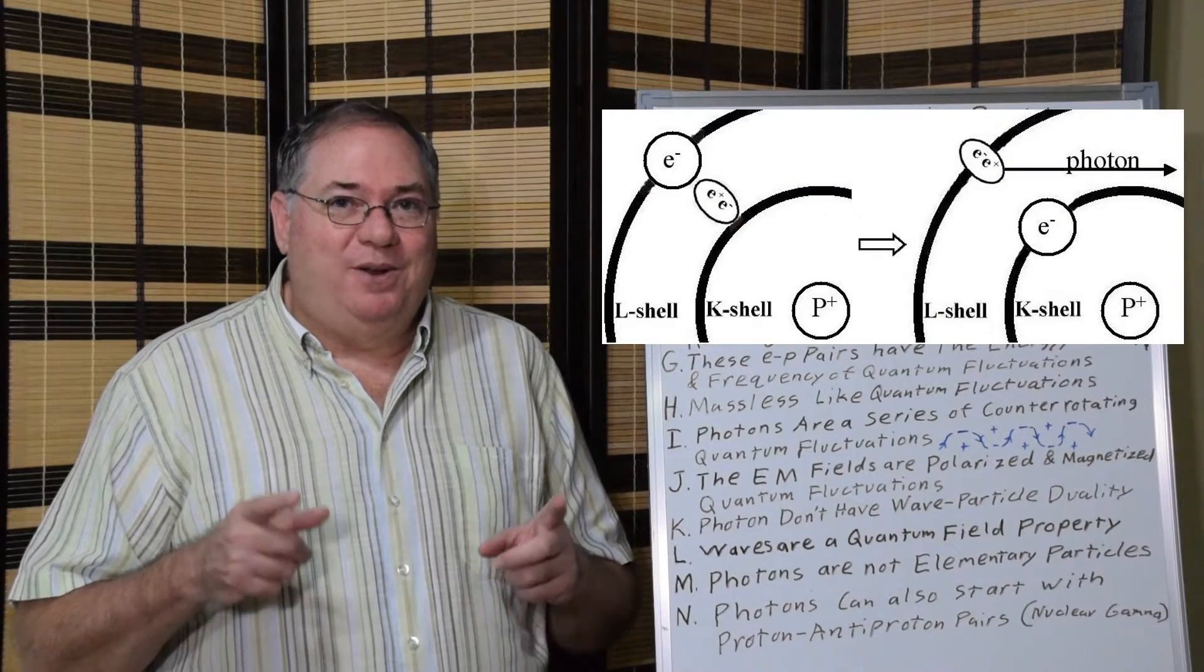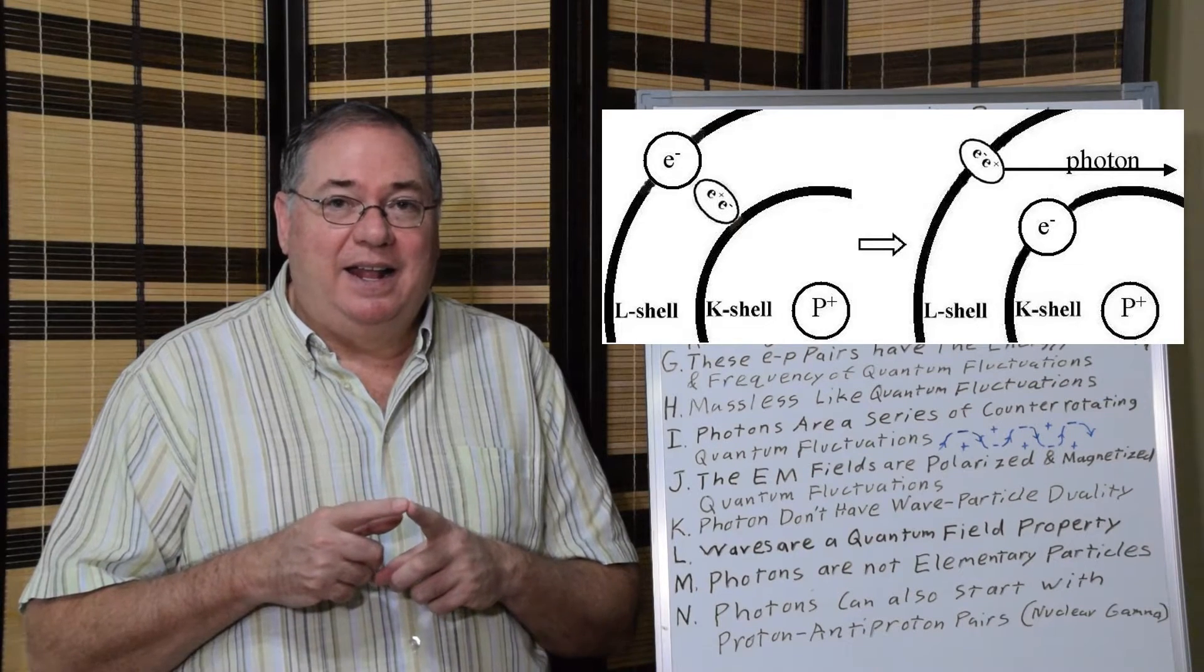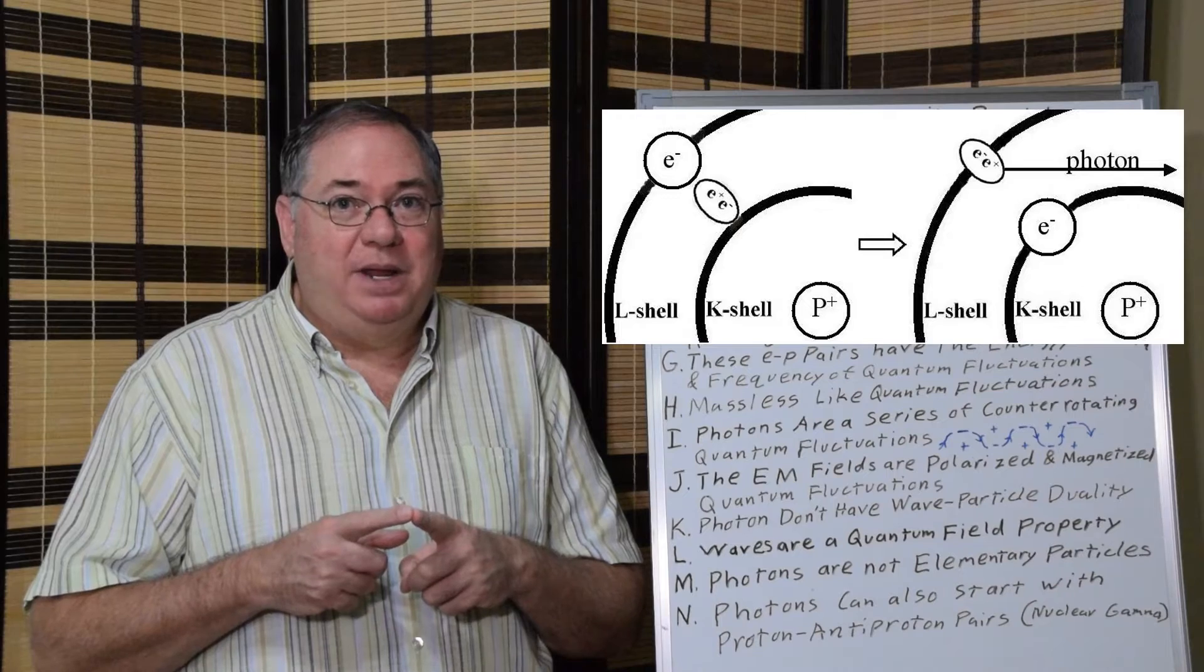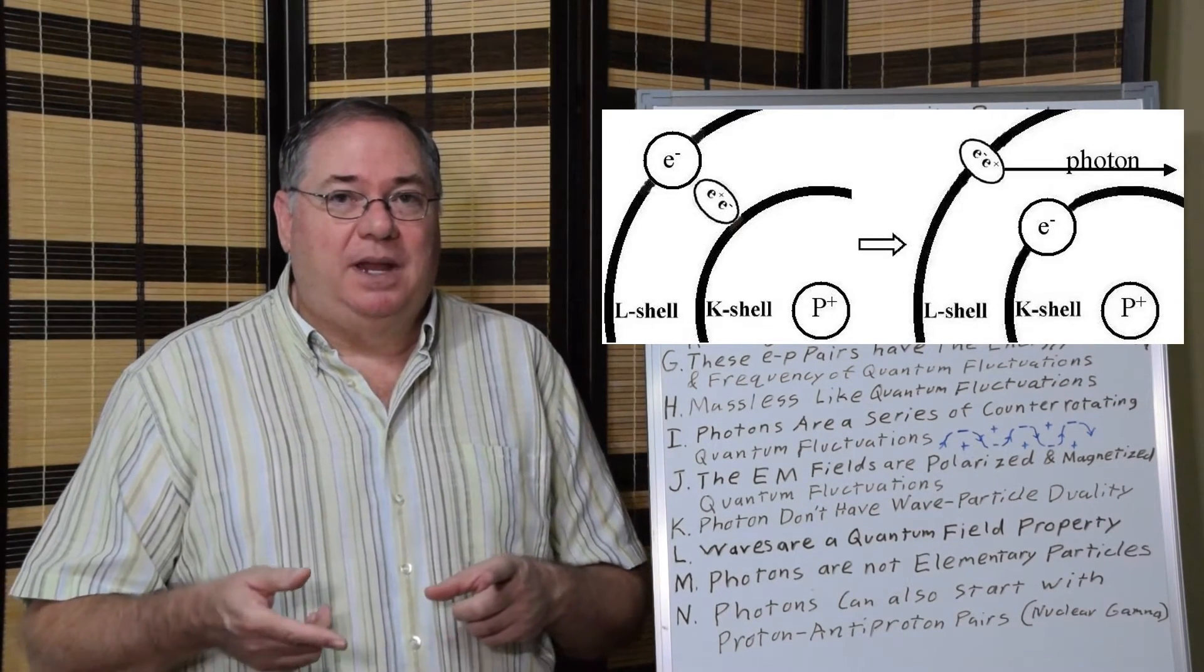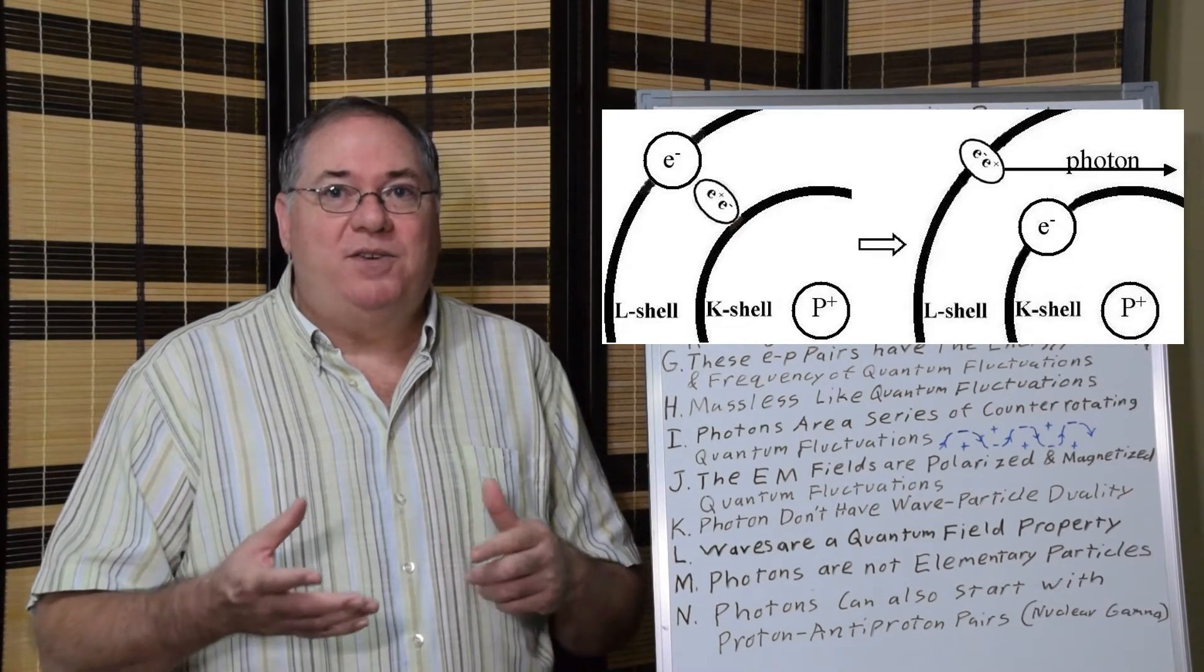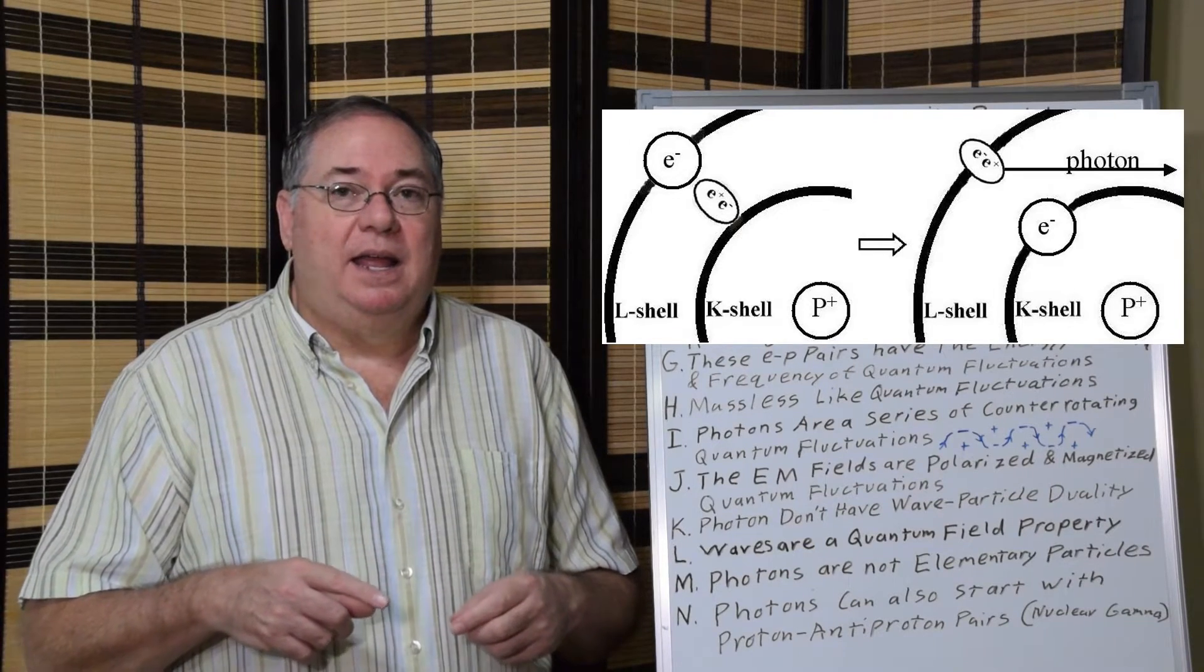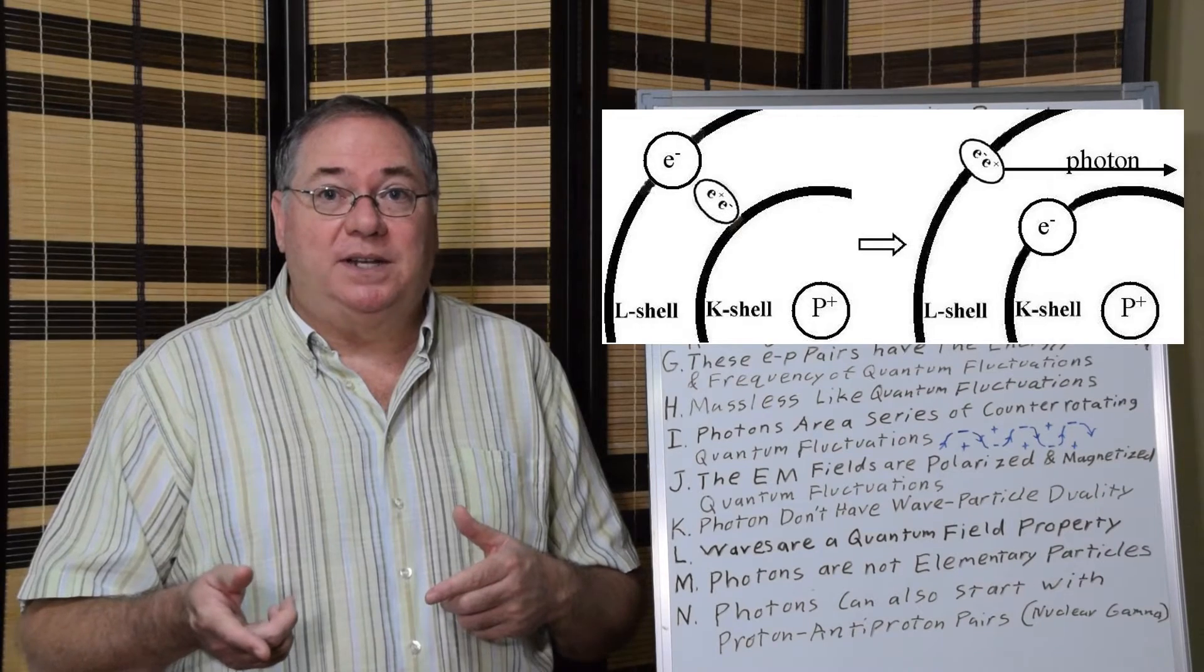It's also important to note that when an electron and a positron annihilate and they have excess energy, so they can't just annihilate completely, that starts a photon. So we can think of the formation of photons in terms of electrons and positrons annihilating, and then we can think of the absorption in terms of electrons and positrons annihilating.